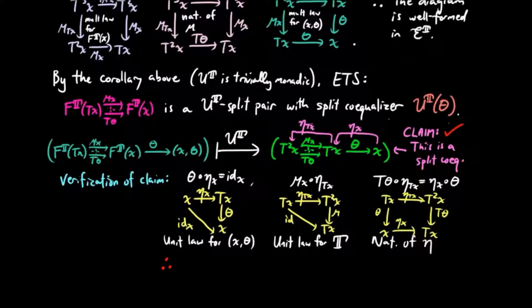Therefore, this absolute co-limit lifts to theta as a co-equalizer of mu X, T theta in the Eilenberg-Moore category, which is what we wanted to show, and completes the proof.